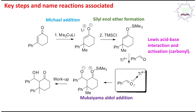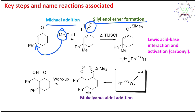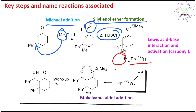The four name reactions associated with this process are: first, Michael addition — the Gilman reagent adding at the beta position; second, silyl enol ether formation — trapping the enolate with trimethylsilyl chloride; third, Lewis acid-base interaction and carbonyl activation; and fourth, the Mukaiyama aldol addition.